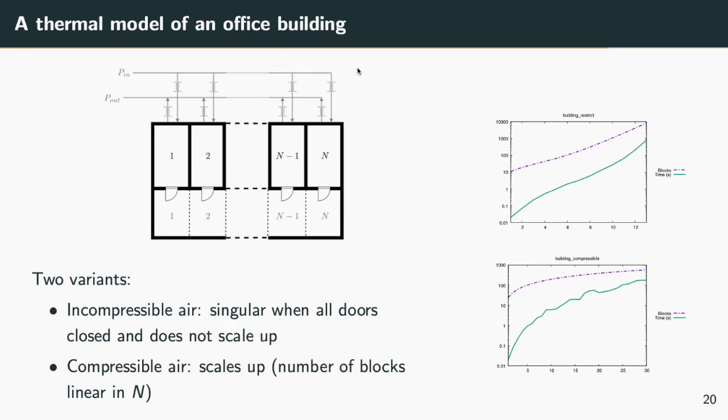This model comes in two flavors. One has an incompressible model of air. In the other, the air is compressible. In the first model, our method does not scale up nicely. The reason is that the BTF decomposition blows up because there are an exponential number of blocks of equations that span over the whole model.